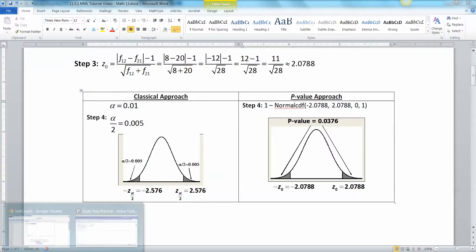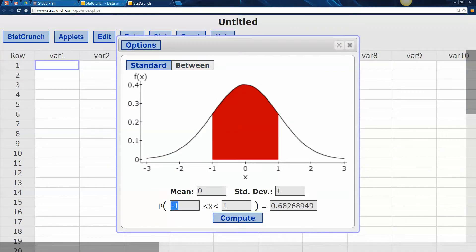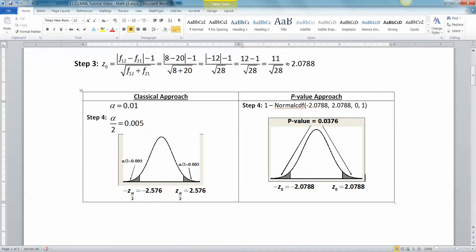With StatCrunch, it would be the same thing. You'd click on between to make it a between problem. You'd say negative 2.0788 and positive 2.0788, and press enter. And there's the same number that the calculator came up with, and you do 1 minus that. All right, so that's that. We've done step four, both methods.